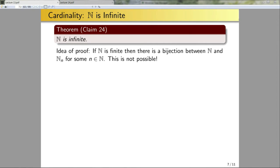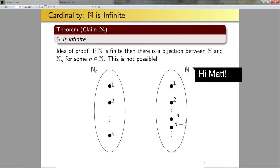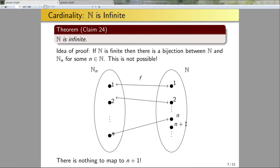Graphically: given N_n = {1,...,n} and N, if I have any injection from N_n to N I can rewrite it so that 1 maps to 1, 2 maps to 2, up to n maps to n. But then N has the element n+1 that has nothing mapping to it. Since nothing maps to n+1, function f cannot be a surjection, which means any function f from N_n to N cannot be a bijection.